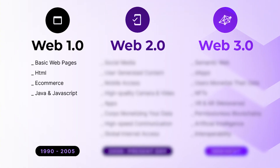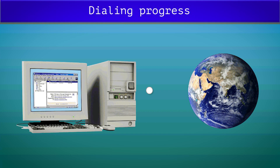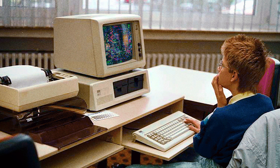Before we dive into what Web 3.0 is, let's take a look at the previous versions of the web. Web 1.0, also known as the read-only web, was the first iteration of the web, primarily focused on delivering static content to users.